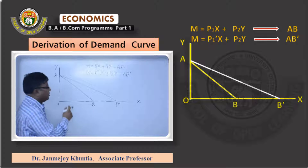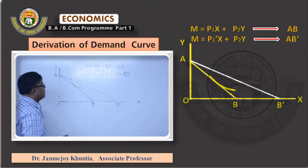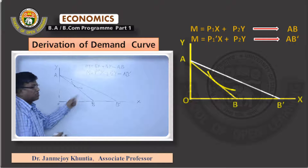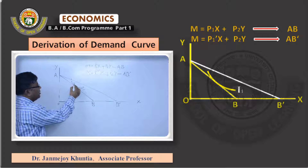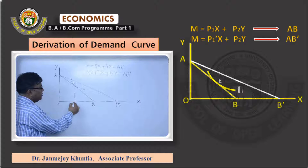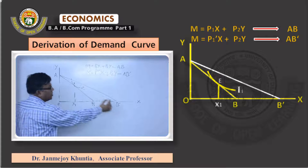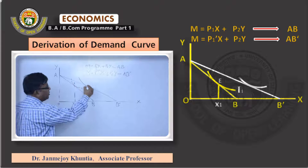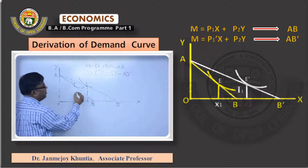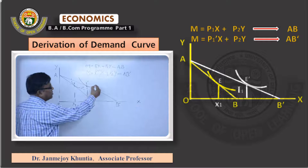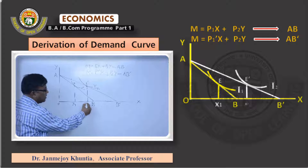Now find out the equilibrium point. The equilibrium point on the first budget line lies somewhere here — that is the point of tangency between the indifference curve and the budget line. Call it I1, the first indifference curve. The equilibrium point is point E, where the consumer is purchasing X1 amount of good X. As a result of fall in price, on the new budget line AB', the new equilibrium point will be somewhere here where the new point of tangency lies. The new point of tangency is E', and this indifference curve is labeled I2. The new quantity demanded is X2.